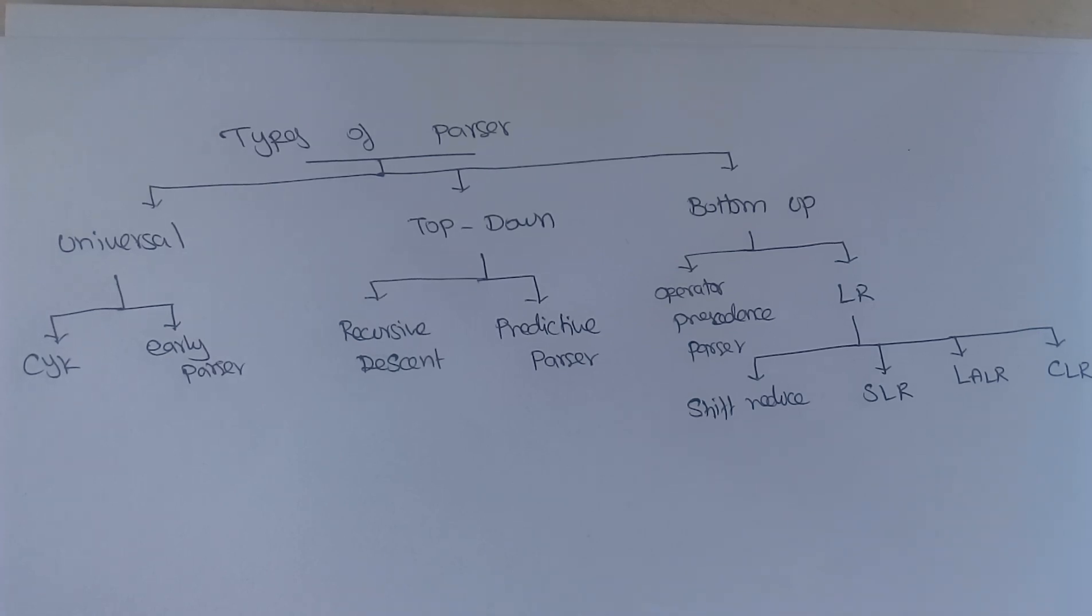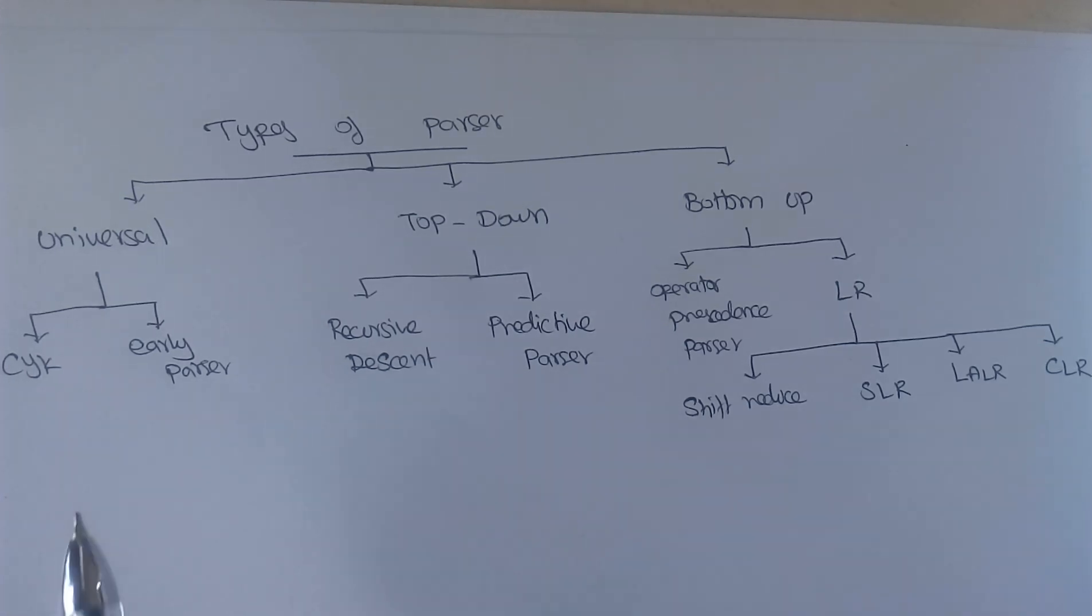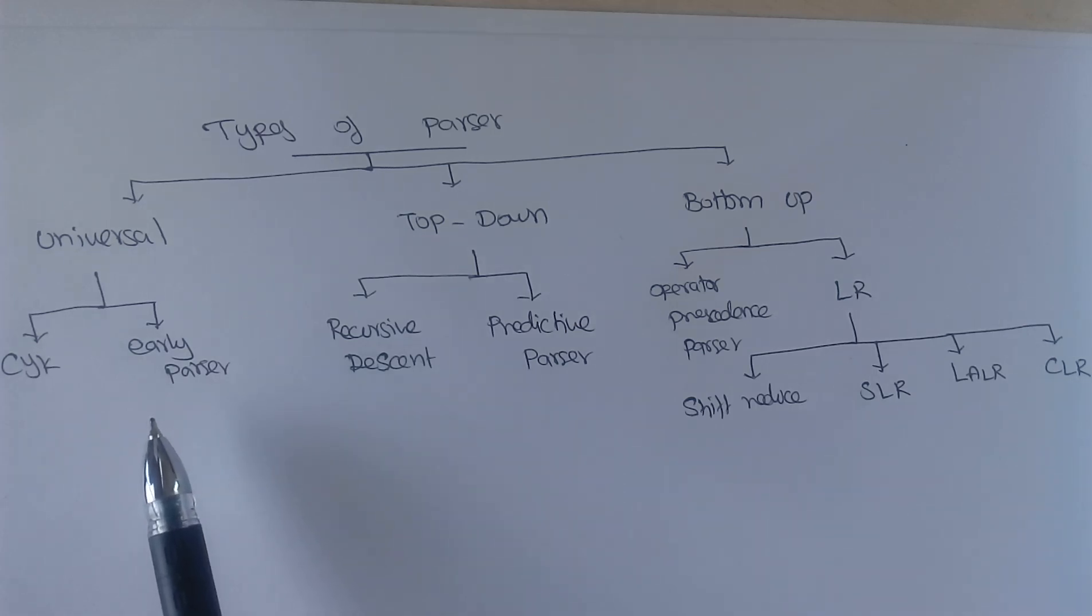One is a universal parser, another one is top-down parser, and another one is bottom-up parser. A universal parser uses algorithms for generating it. One is CYK algorithm and another one is called Earley parser. And this is too inefficient when we are going for compiler design.